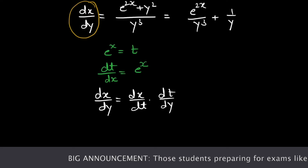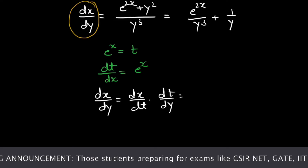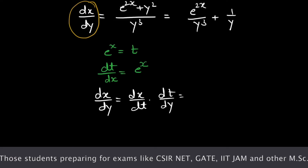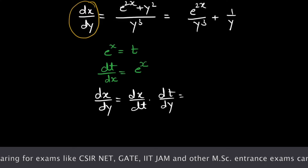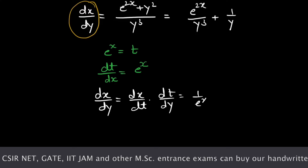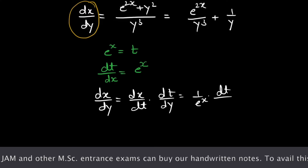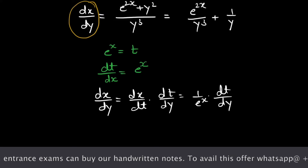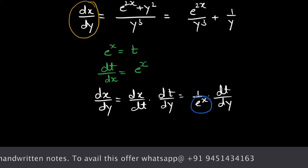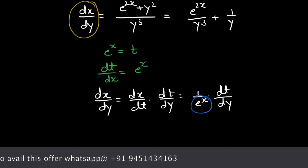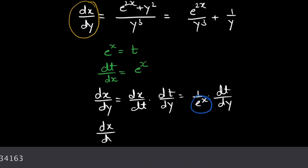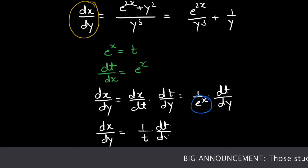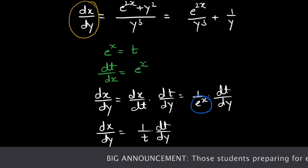So dx/dt will be 1 over e raised to power x, giving us 1 over e^x times dt/dy. Since e raised to power x is t, we have dx/dy equals 1 over t times dt/dy. Now substitute this value into the equation.